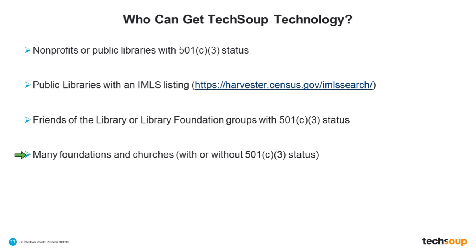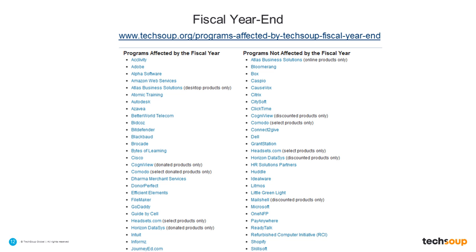The reason I wanted to highlight this is that so many organizations are eligible for so many things that they don't realize they can actually receive. Many folks are aware that we have a fiscal year end, which for us is June 30th every year, and some of our donation programs reset between July 1st and June 30th.